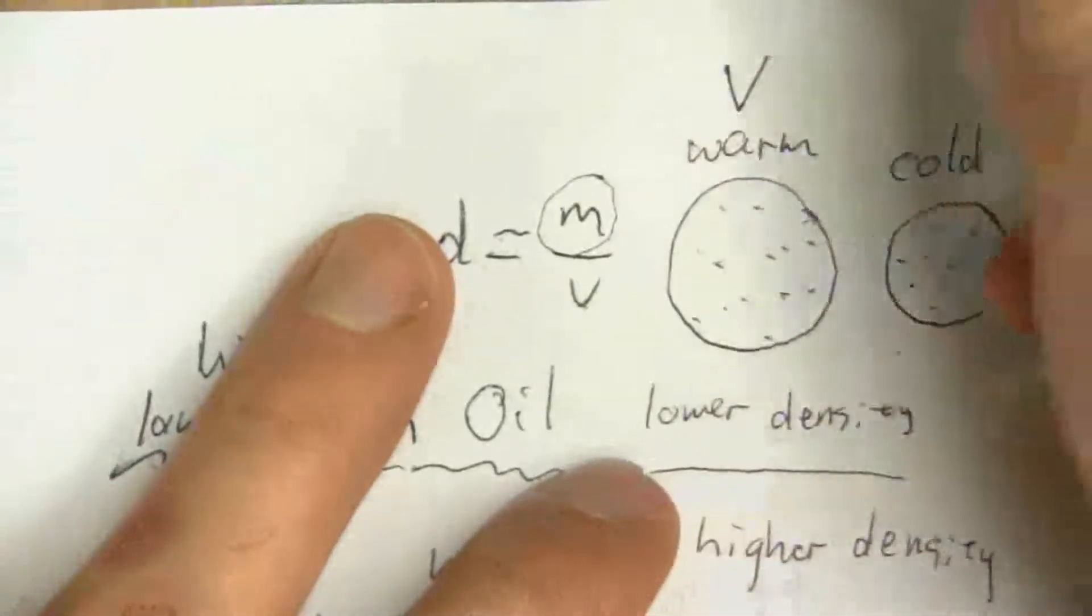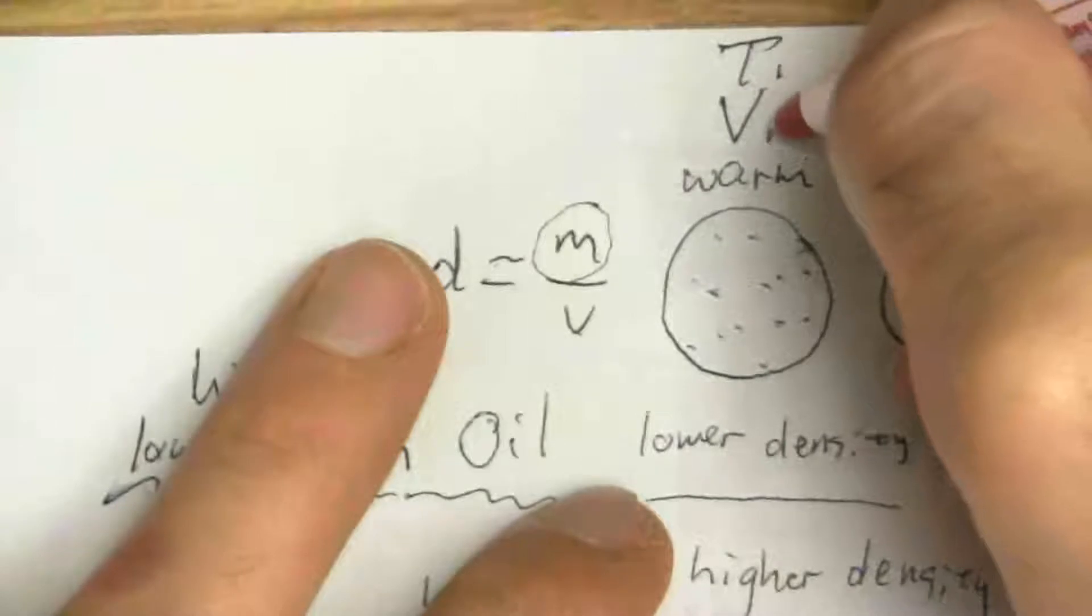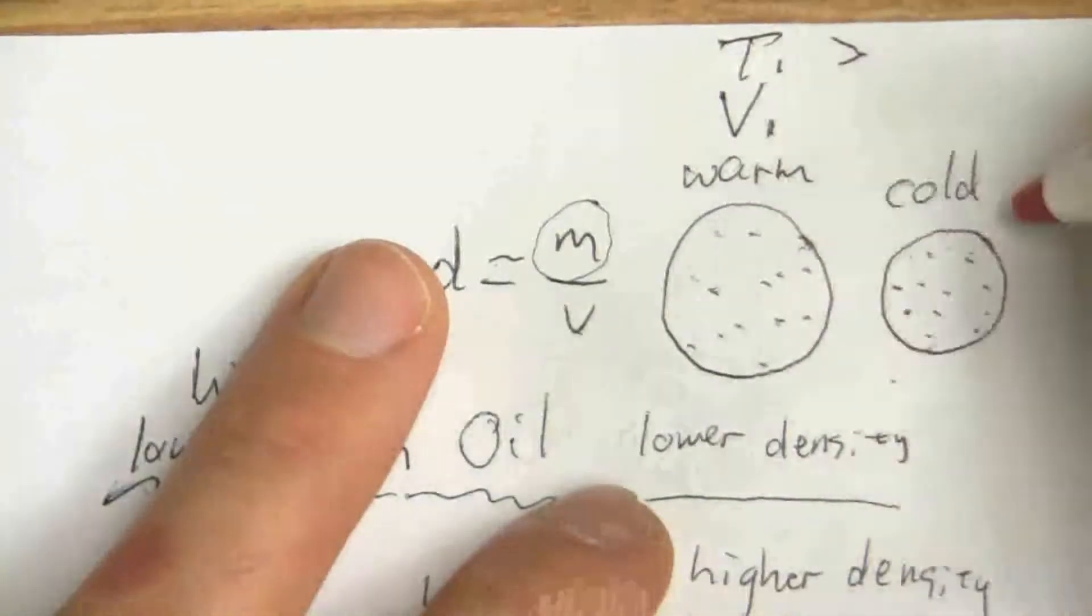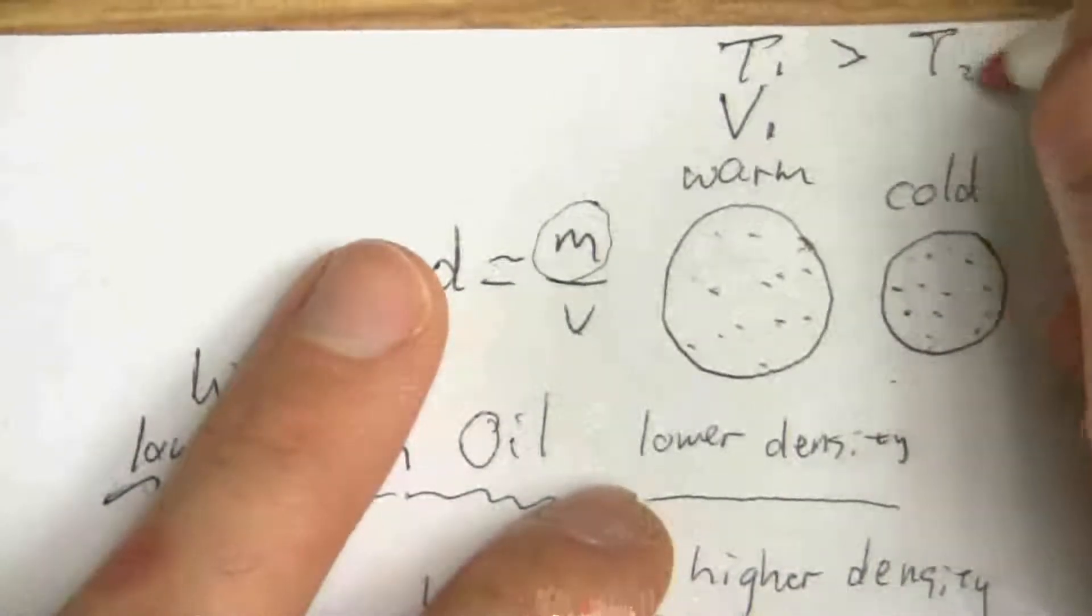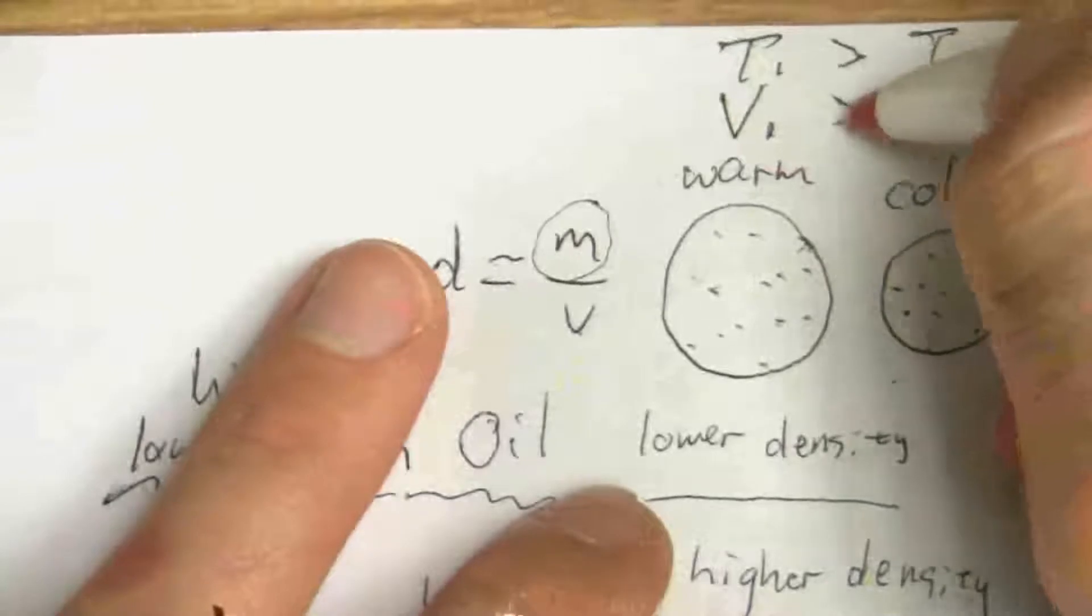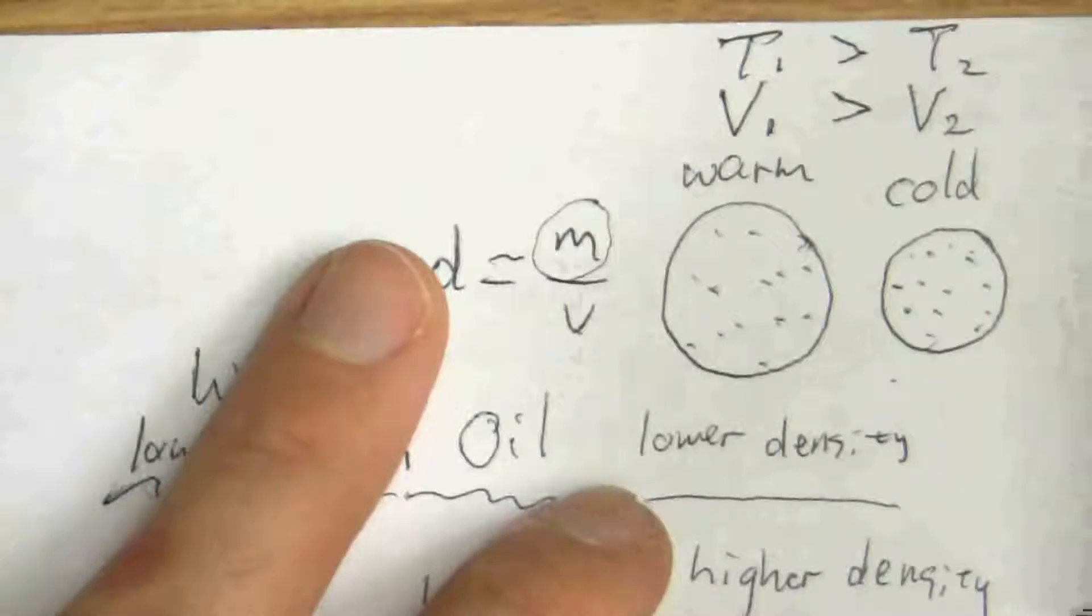Well, let's compare volume with temperature. My initial temperature here is greater because it's warmer than my final temperature. And the volume is also greater than the final volume.